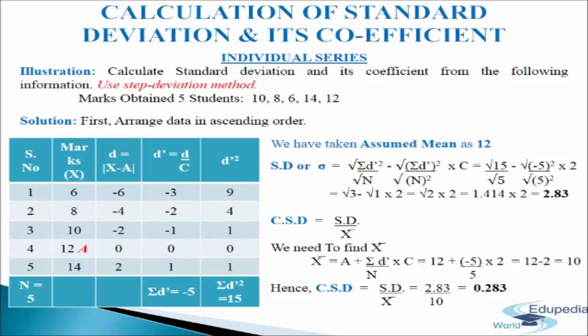In the last column we write d'². Squaring the values of d': (−3)² = 9, (−2)² = 4, (−1)² = 1, 0² = 0, 1² = 1. We get σd'² = 15. Now we write the formula: SD = √(σd'²/n − (σd'/n)²) × c. We substitute the values and calculate.